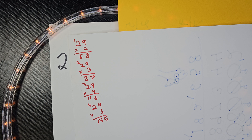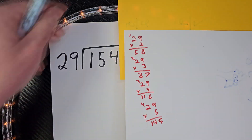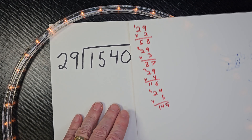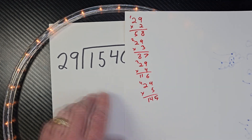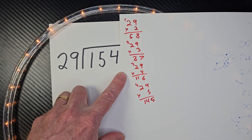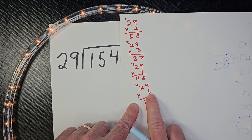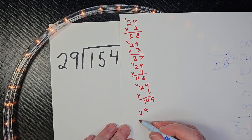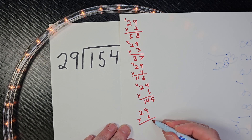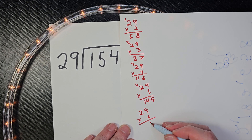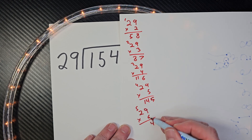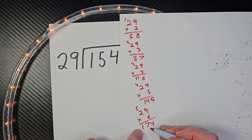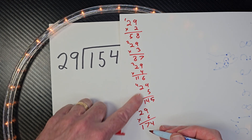These numbers are going to come in useful so I don't have to do all that work later on. So I can put 29 into 154, but how many times? The closest number right here would be 5 times. And if you're not sure, you can always do one more — like 29 times 6: 9 times 6 is 54, and then 6 times 2 is 12, plus the 5 would be 17, so that's 174. That's way too high, so we're going to stay with 5.